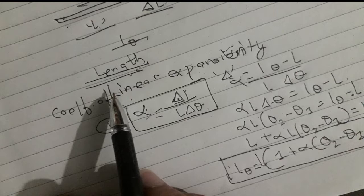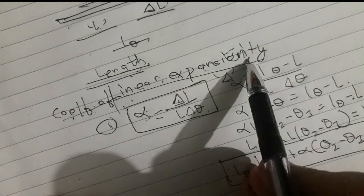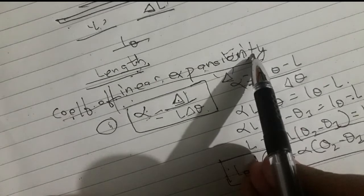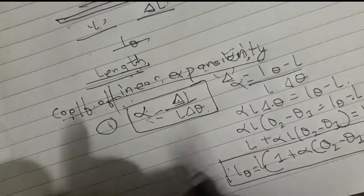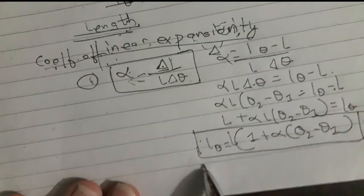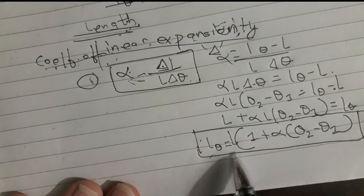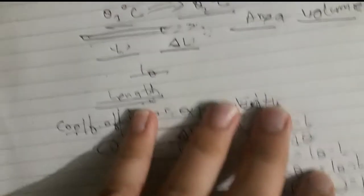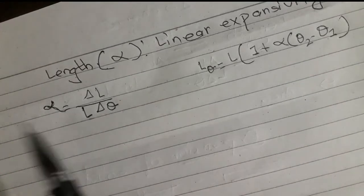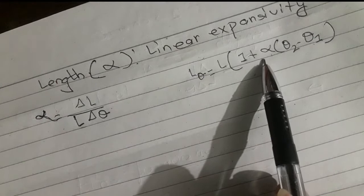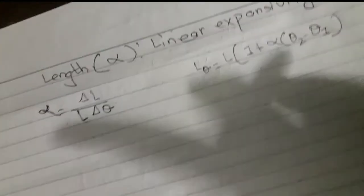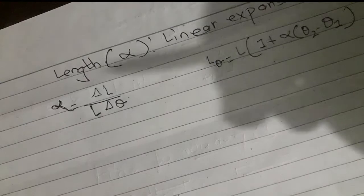The coefficient of the length is the coefficient of linear expansion, also called linear expansivity, denoted alpha. This represents one-dimensional expansion. When expansion is two-dimensional, we move to area.